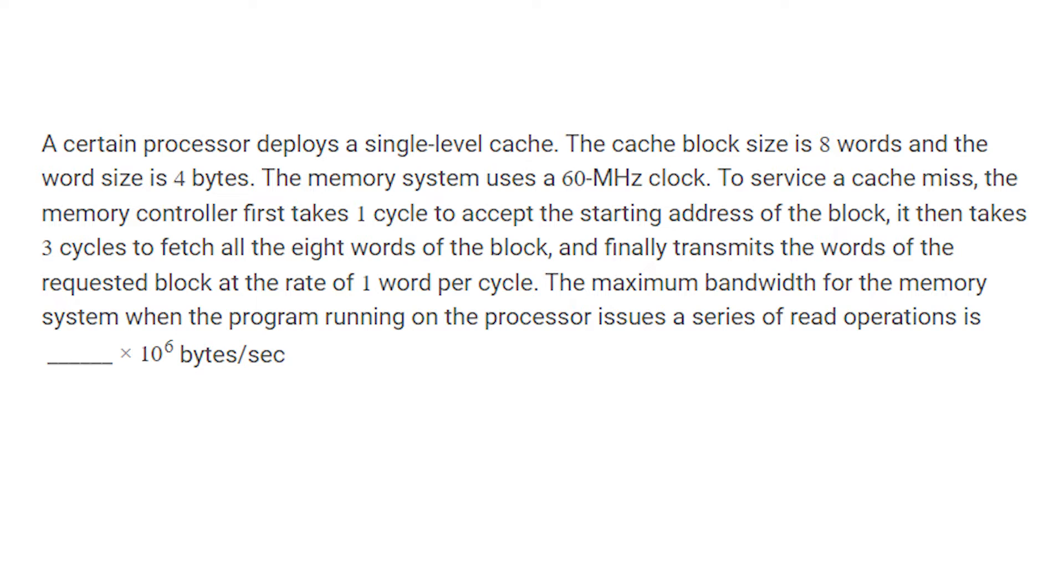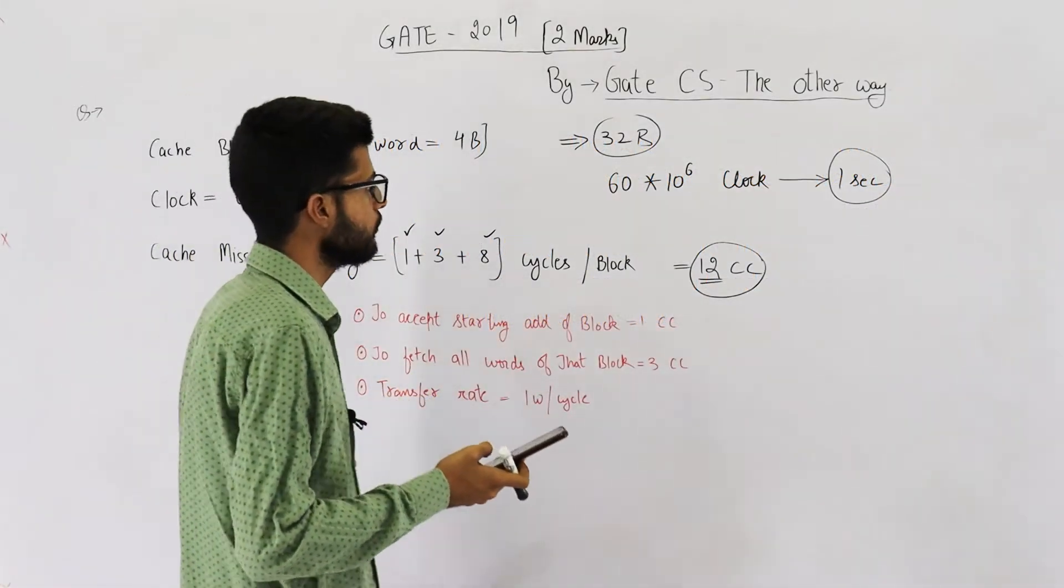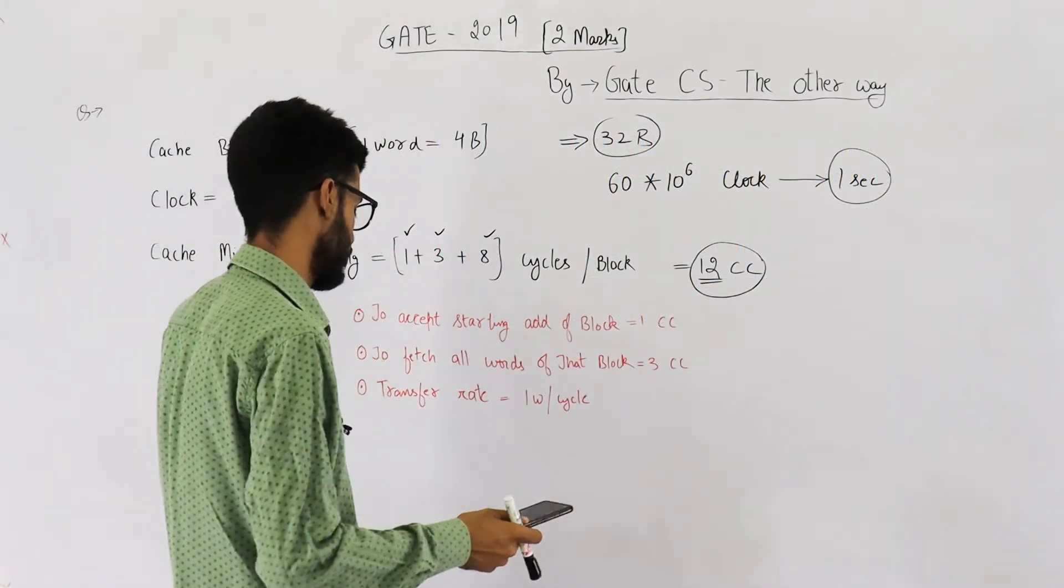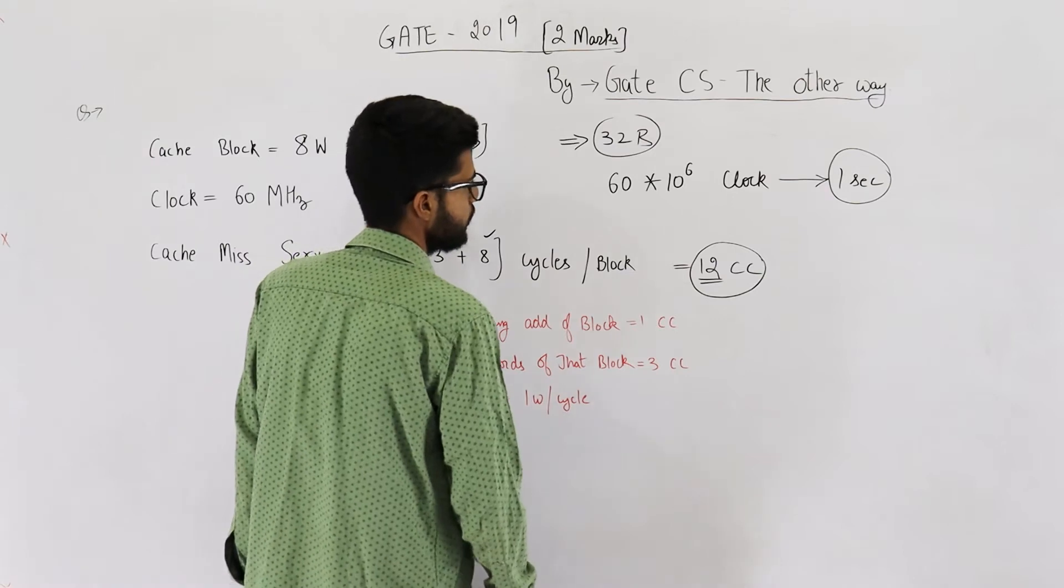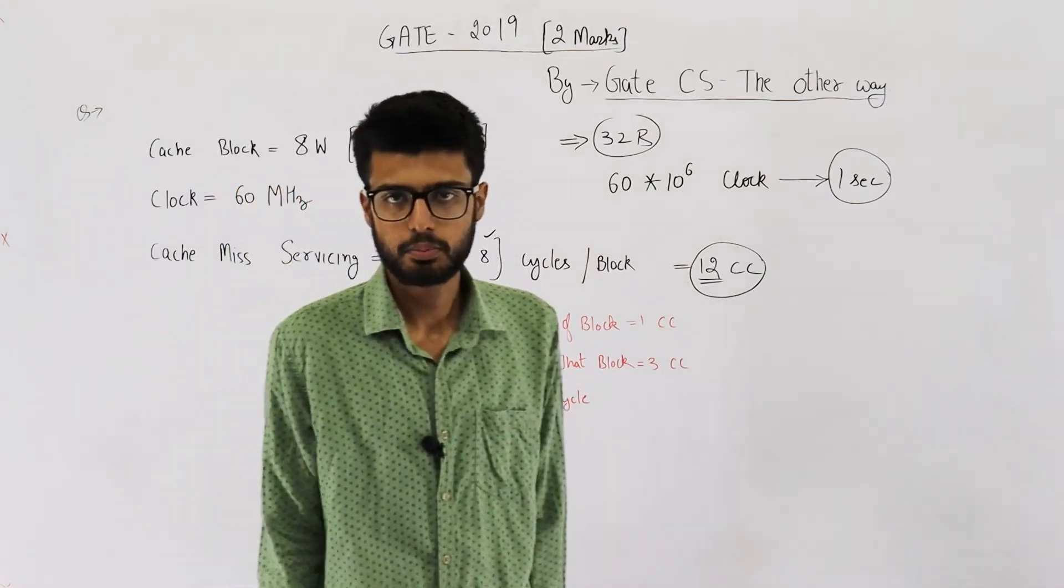The maximum bandwidth of the memory system when program running on processor issues a series of read operations is dash into 10 raised to the power 6 bytes per second. Okay, so you are required to find out the maximum bandwidth in terms of 10 raised to the power 6 bytes per second.